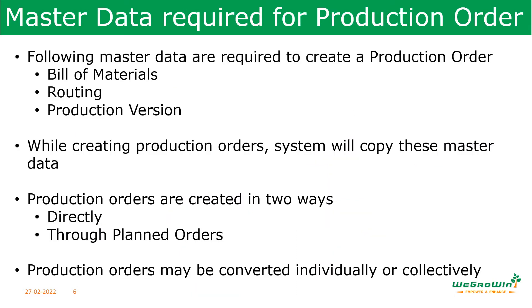The master data — material master, bill of materials, work centers, routing, and production version — forms the core and central information for the production order. When we create a production order for a material, the system looks for the bill of material, routing, and production version as applicable. The system copies all information from the master data so that minimal effort is involved in production order creation, whether we create it by converting a planned order from MRP or manually.